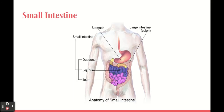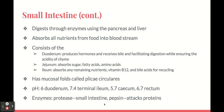The small intestine consists of the duodenum, jejunum, and the ileum. The small intestine digests through enzymes using the pancreas and the liver. It also absorbs all nutrients from the food into the bloodstream.